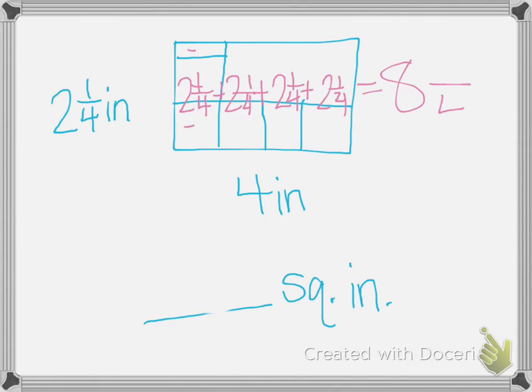Adding my fractions, my denominator is going to stay the same. Add my numerators. 1 plus 1 plus 1 plus 1 is 4. 4 fourths is the same thing as one whole. 8 plus 1 is 9. So our answer is 9 square inches.